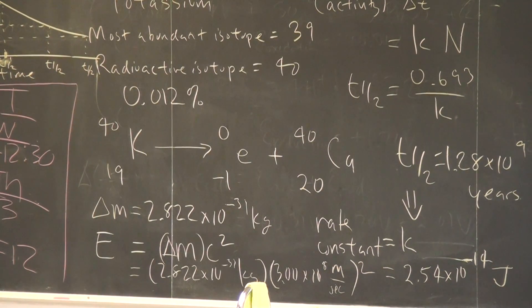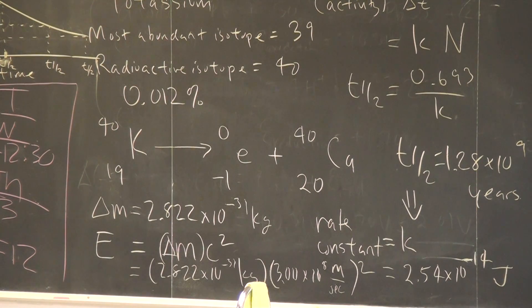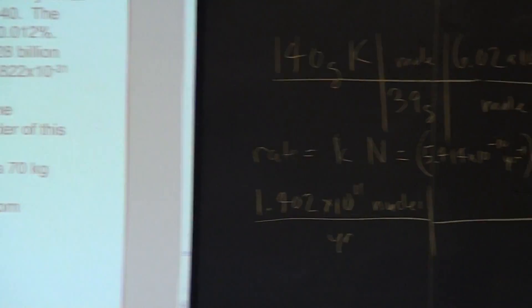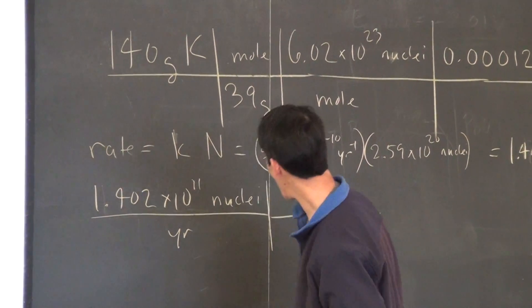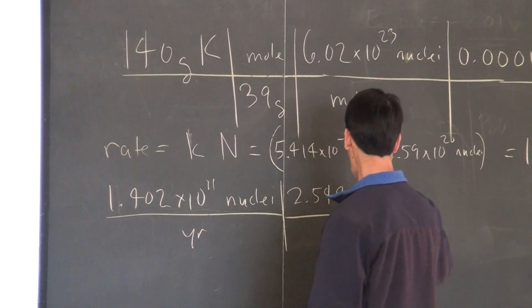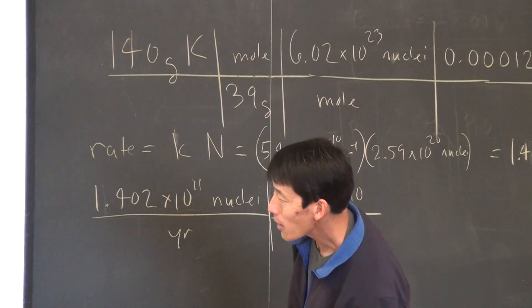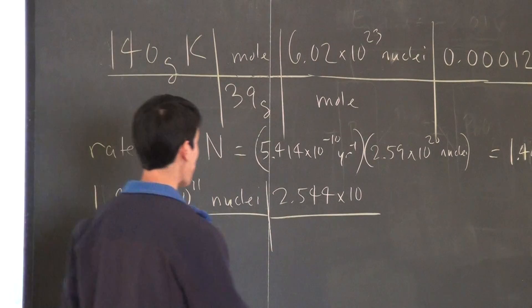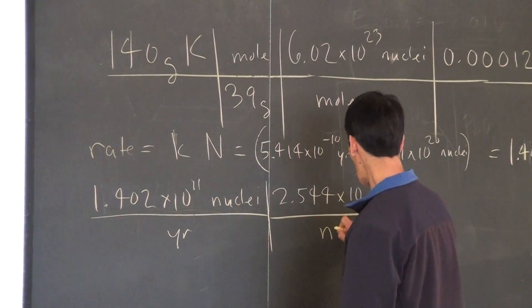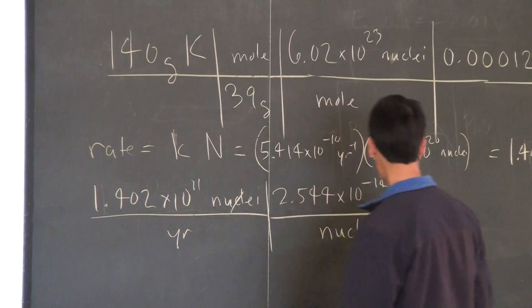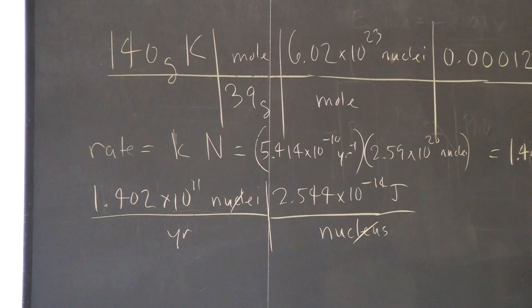Okay, so let's do this. Yes, we have 1.402 times 10 to the 11th nuclei disintegrate in one year. And you just calculated the amount of energy which is released when one nucleus undergoes radioactive decay. Okay, so that was 2.544 times 10 to the minus 14 joules per nucleus. This is the amount of joules per year. Okay, so that's the amount of energy released in one year.